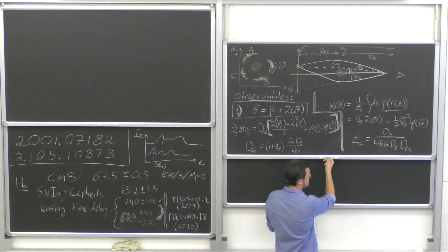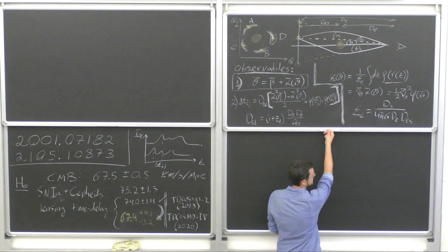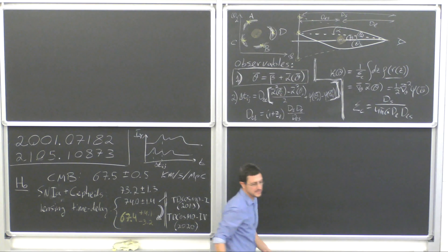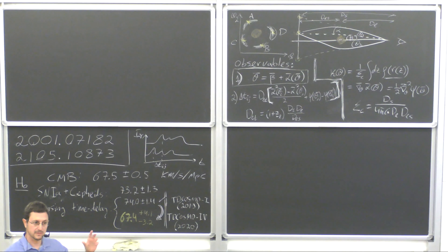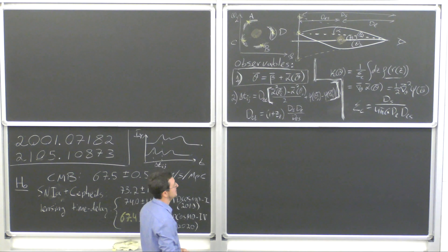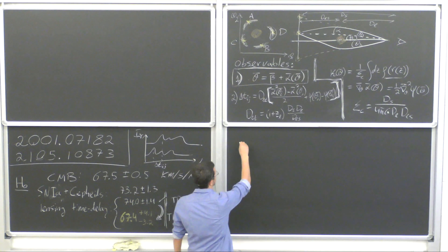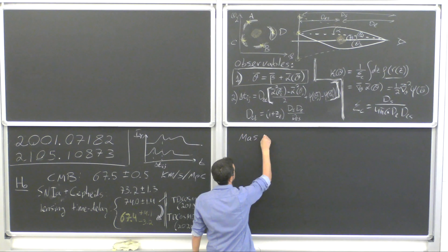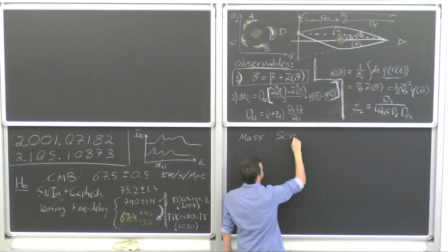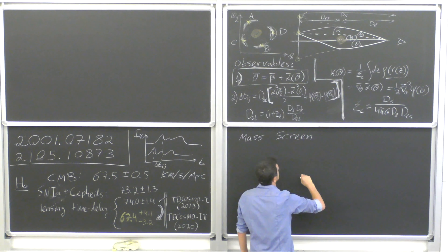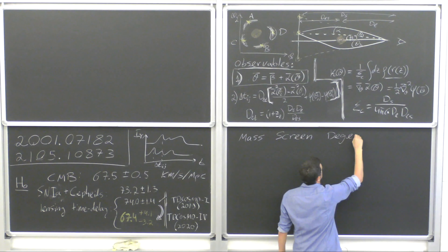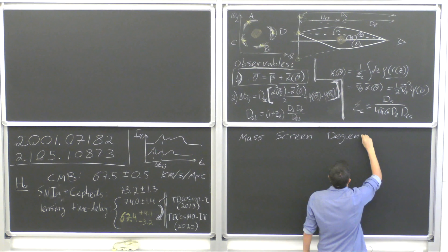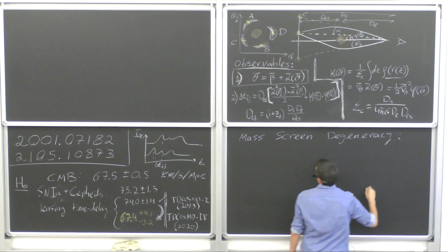This is how they measure lensing, and now how they cannot measure lensing. The problem is that this is an inversion problem — there are derivatives you need to invert, and that creates degeneracies. A very famous degeneracy is the mass screen degeneracy, often called MSD.